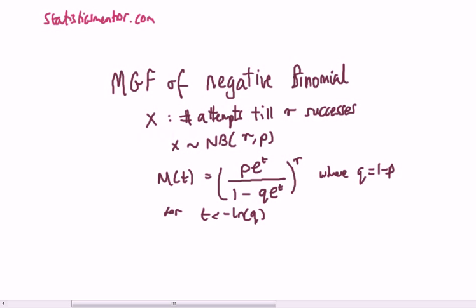The MGF of a negative binomial. The negative binomial is applied when we are interested in the number of attempts until we get the first r successes.